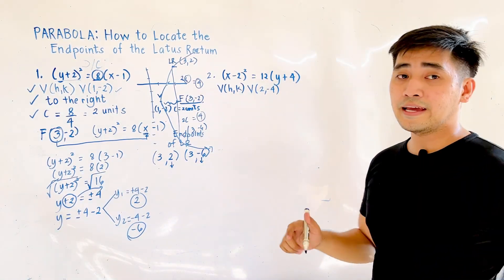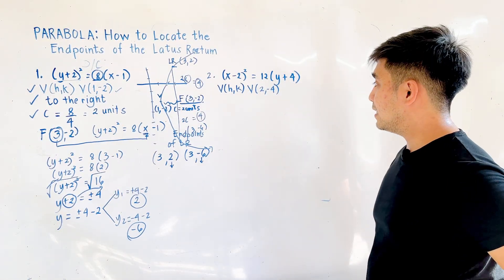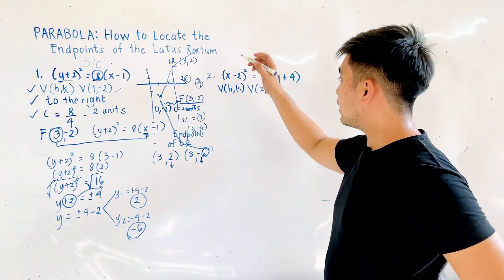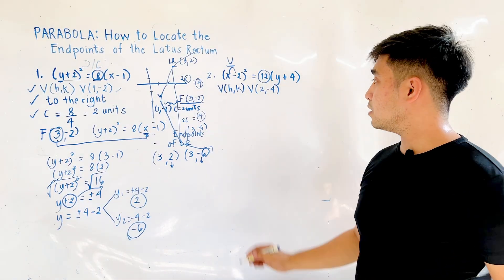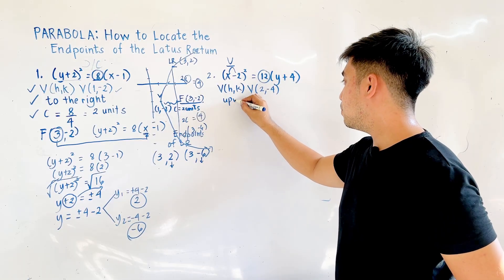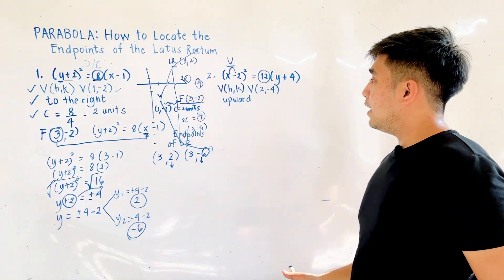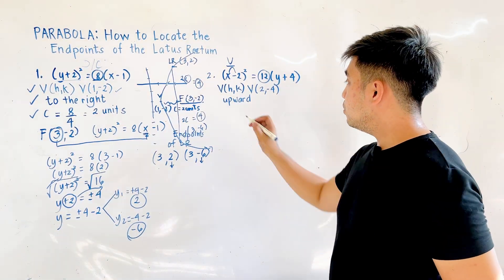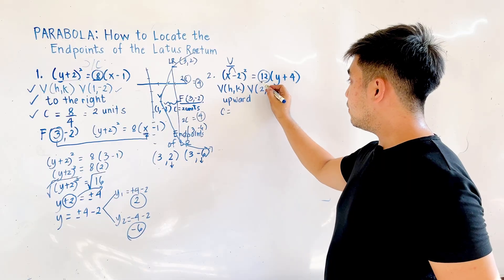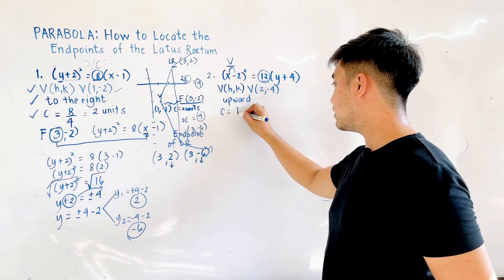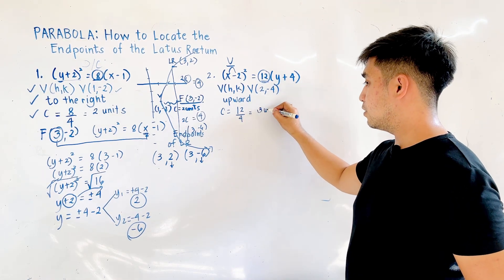The second step is to identify the direction of the opening. Since we have x squared, the parabola opens either up or down. Because the right side is positive, the parabola opens upward. The focal distance c equals the coefficient 12 divided by 4, which gives us 3 units.